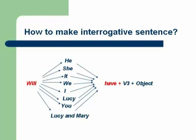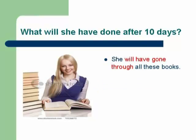How to make an interrogative sentence of future perfect tense: it is again very simple — all you need to do is bring 'will' to the beginning of the sentence. Then the sentence will become: Will he have made a report? Will she have made a report? Will it have made a report? Will we have eaten the cake? Will I have played cricket? Will Lucy have played tennis? Will you have eaten a cake? Will Lucy and Mary have eaten a cake?